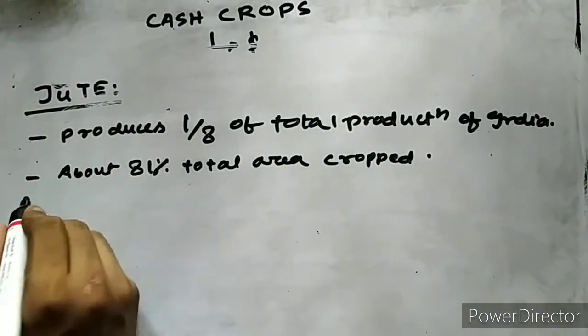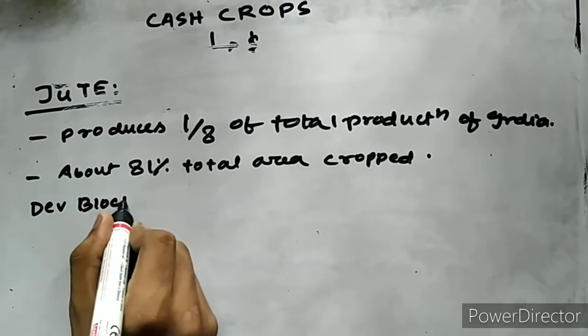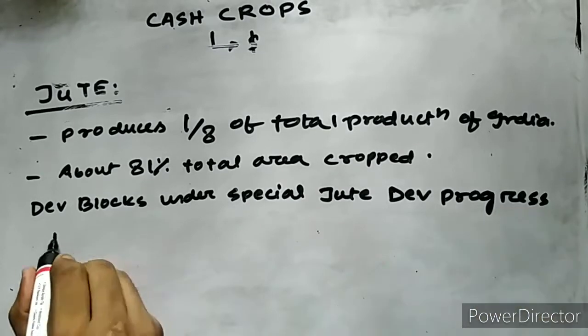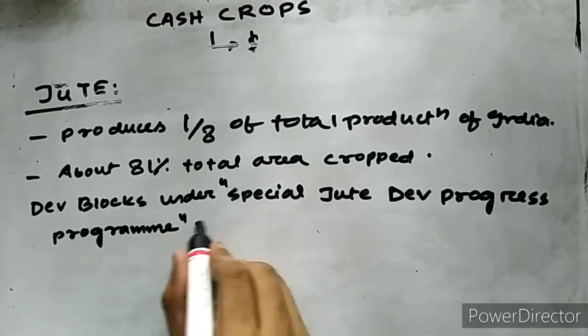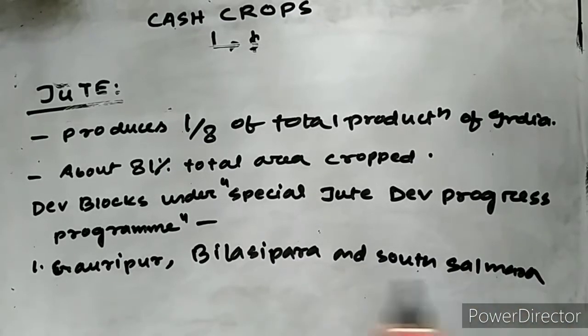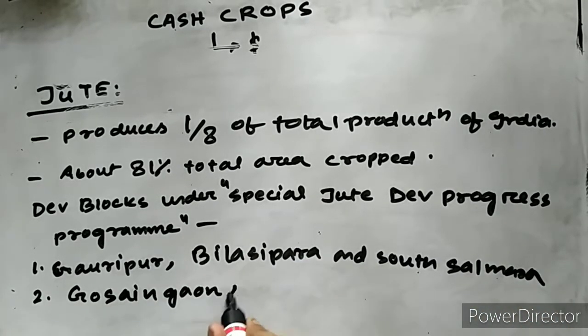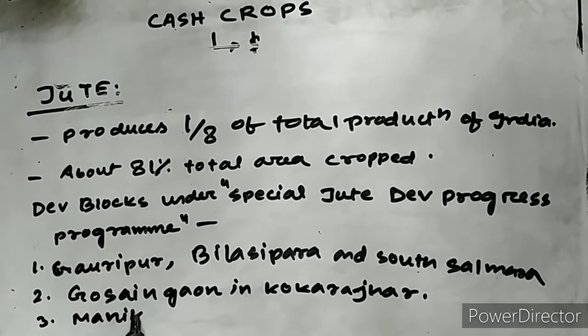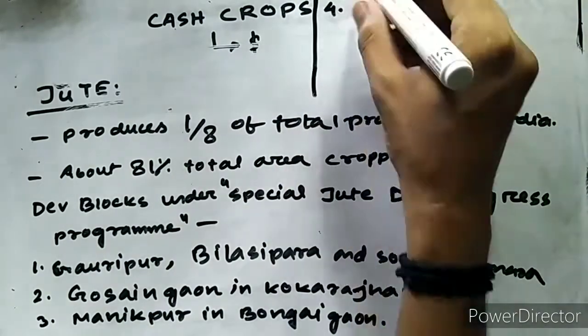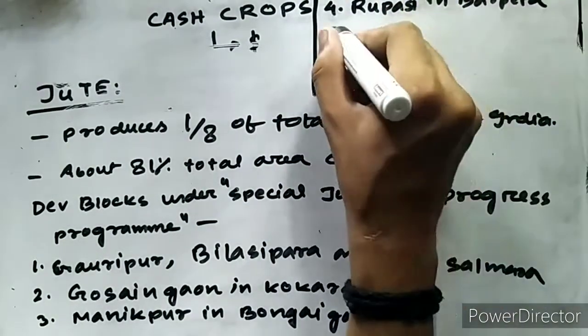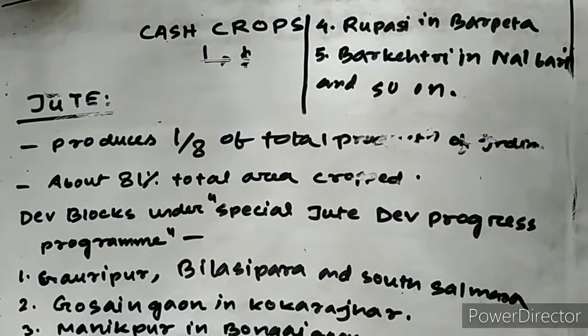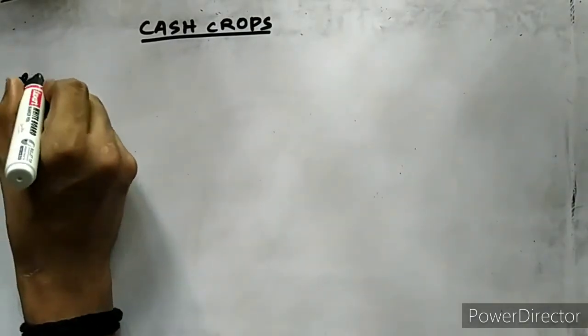In recent years, efforts have been made to improve the quality and augment the production of jute in Assam. For this purpose, development blocks have been included under the Special Jute Development Programme. Those blocks are Gauripur, Bilasipara in South Salmara, Gossaigaon in Kokrajhar, Rupsi and Gobardhan in Barpeta, Barkhetri in Nalbari, Hajo in Kamrup, Dalgaon, Sialmari, and Majbat in Darrang district.